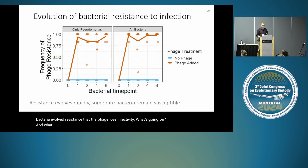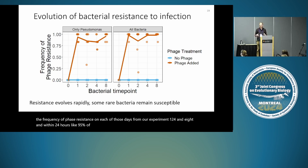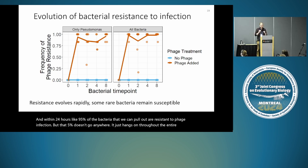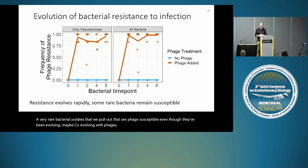What we see is that really rapidly, the bacteria evolve resistance. Plotted here is the frequency of phage resistance on days one, two, four, and eight of our experiment. Within 24 hours, about 95% of the bacteria we can pull out are resistant to phage infection. But that 5% doesn't go anywhere — it just hangs on. Throughout the entire experiment we continue to see very rare bacterial isolates that are phage susceptible, even though they've been co-evolving with phages for eight or nine days.